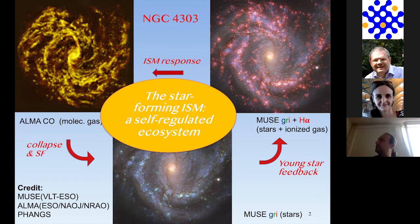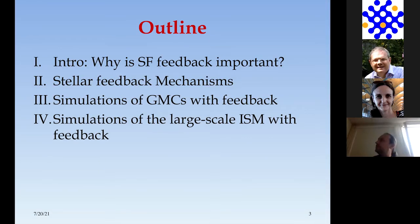I think of the interstellar medium as a self-regulated ecosystem. It's not just stars forming and it's not just feedback, but it's really a cycle—an entire ecosystem in itself. That's what I would like to convey to you today. Here's my outline: I'd like to start with the basic question of why feedback is important. Then I'll outline what the most important stellar feedback mechanisms are, then discuss simulations on the scale of giant molecular clouds, and then turn to the larger scale of a patch of the interstellar medium.